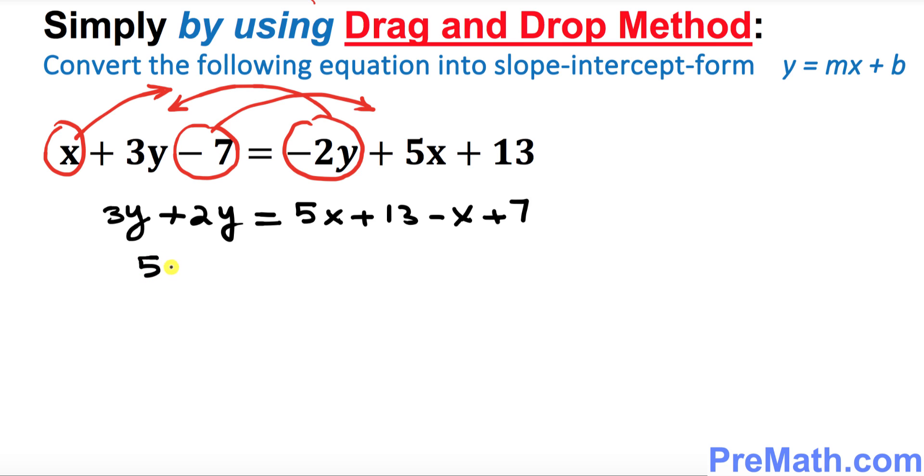3y plus 2y is 5y equal to, now let's combine the like terms. See, right now 5x minus x becomes 4x, and 13 plus 7 is plus 20.